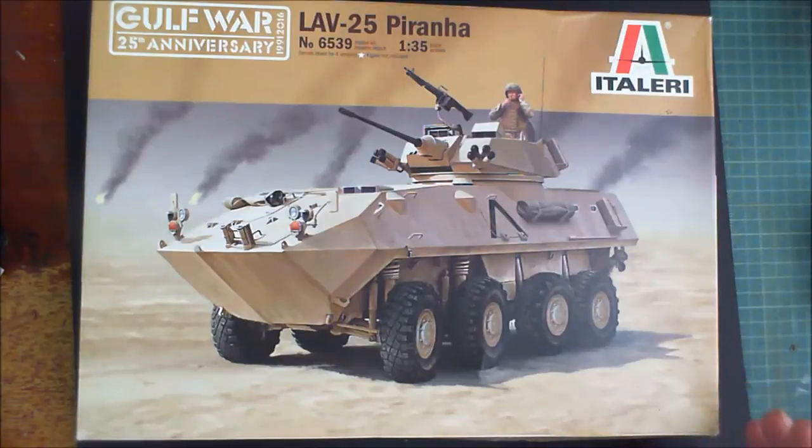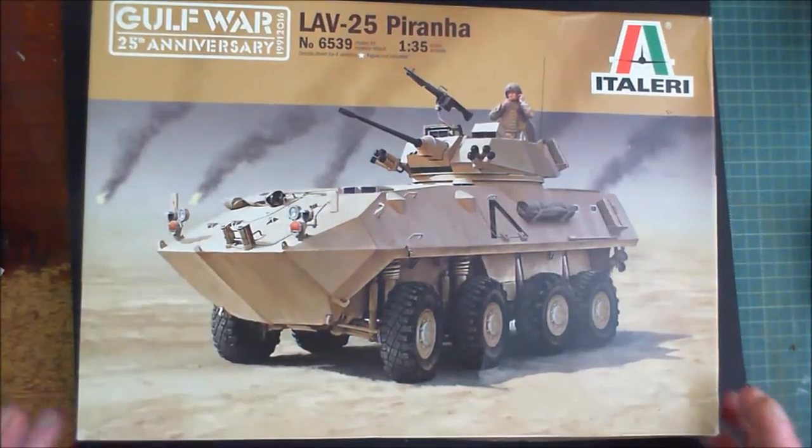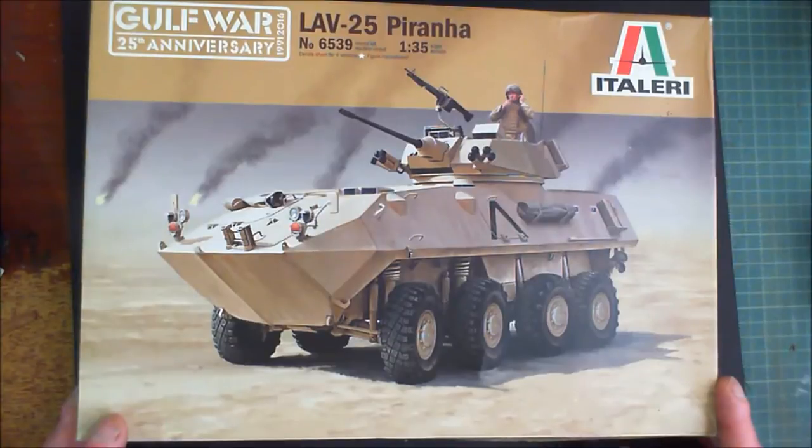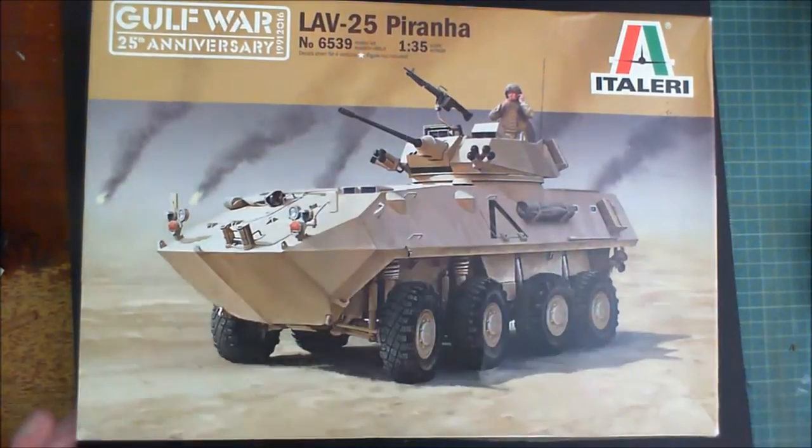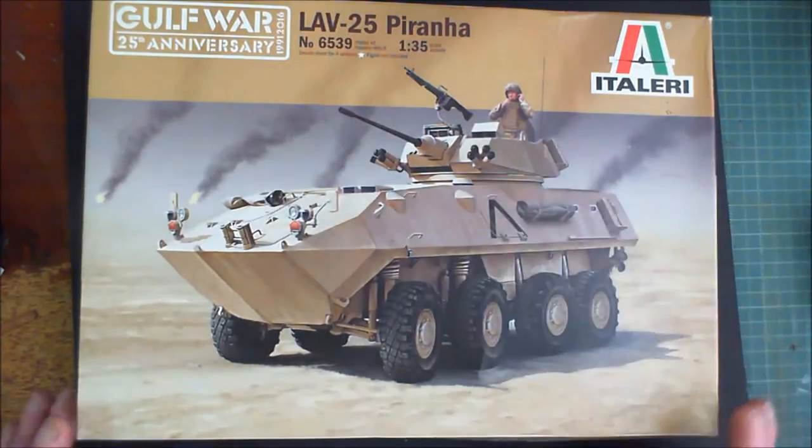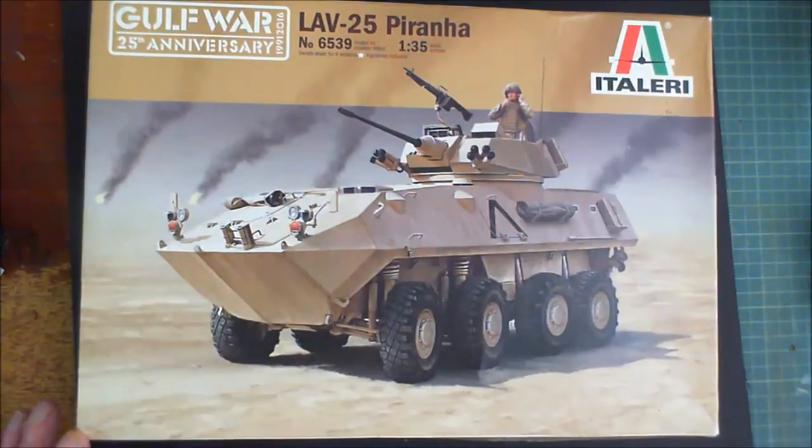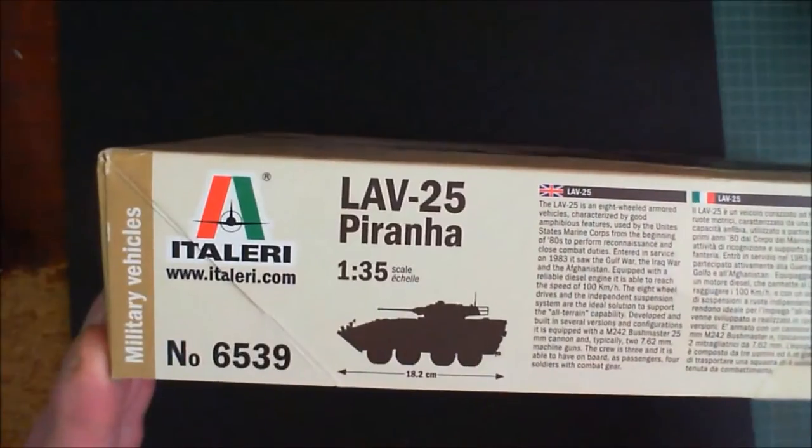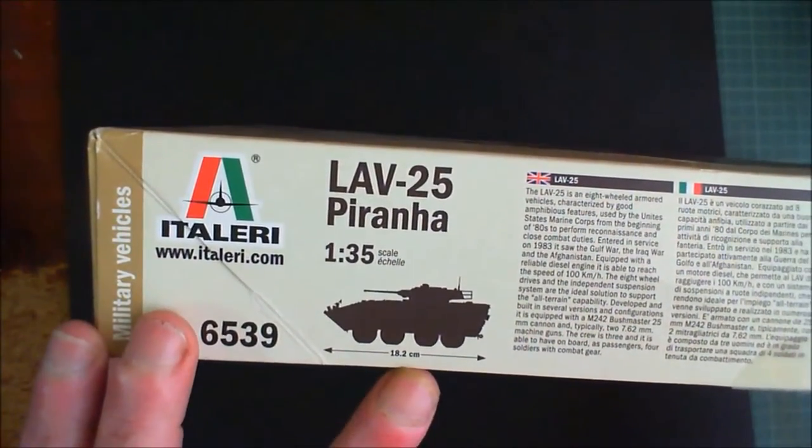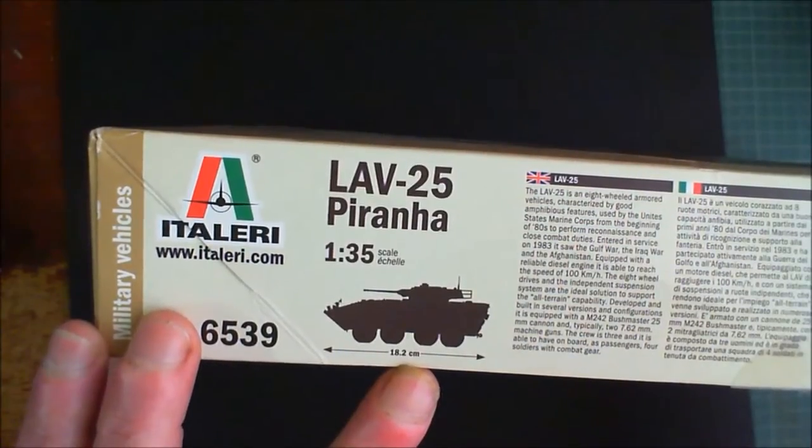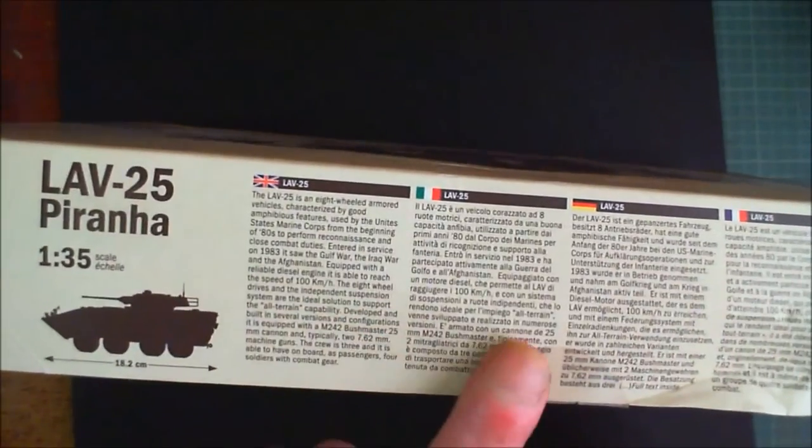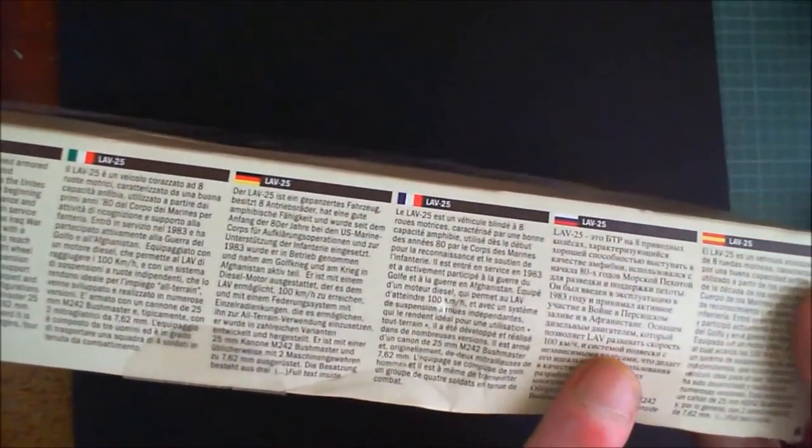So first of all, we'll have a look at the box itself. It's the 25th Anniversary Gulf War LAV-25 Piranha, kit number 6539, and it's a model kit in 1:35th scale from Italeri. Box art shows a nice picture of the LAV-25 in desert colors, obviously somewhere in the Gulf during the Gulf War. The length when completed is 18.2cm long. It gives us some info on the LAV-25 in English, Italian, German, French, Russian and Spanish.